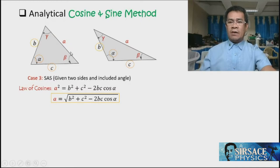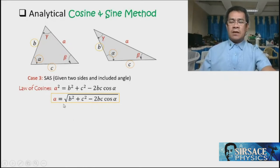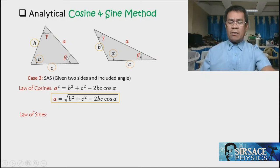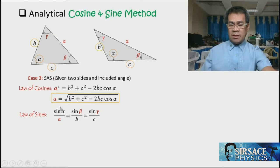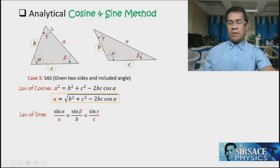If we wish to solve for angles beta and gamma, we use the law of sines. The law of sines states that the sine of an angle divided by its opposite side is the same ratio for all three angles: sine alpha over a equals sine beta over b equals sine gamma over c. Based on our given values—b, c, and alpha—these ratios allow us to find the remaining angles.